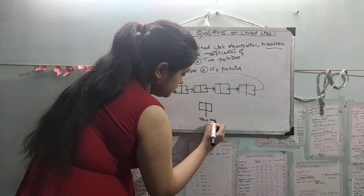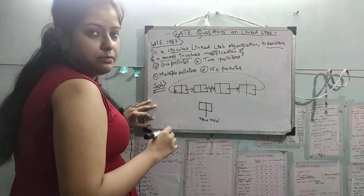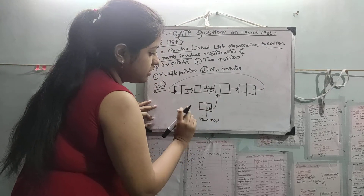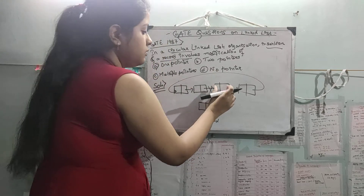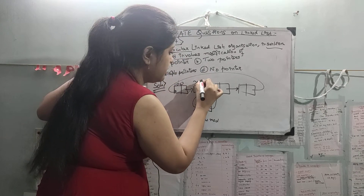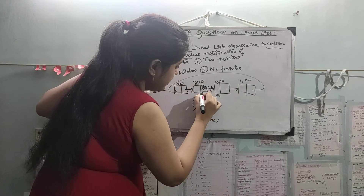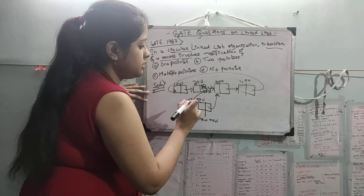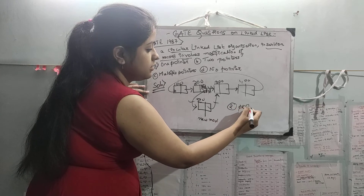Let's say this is our new node, and here we are going to insert this new node. Previously it would have contained a null value, but now this null will be replaced by this pointer. This pointer will point to this node, and here this pointer will point to this node. Let's say the values are 100, 200, 300, and 400. Previously it was 300, now it will be replaced with 500. This new node will be placed in the middle of this linked list. So 1 and 2 — 2 pointers are modified.